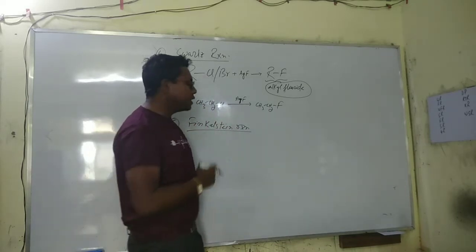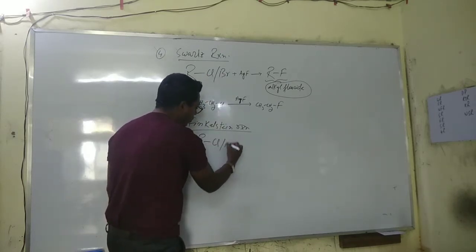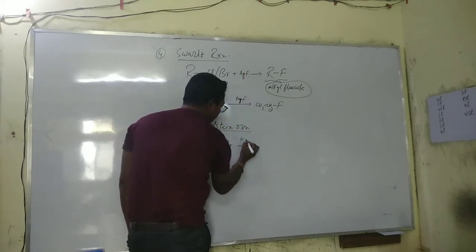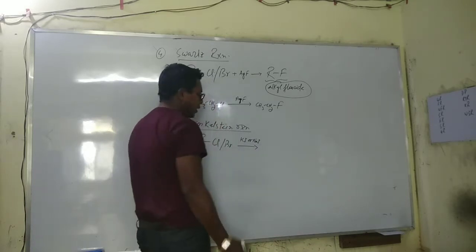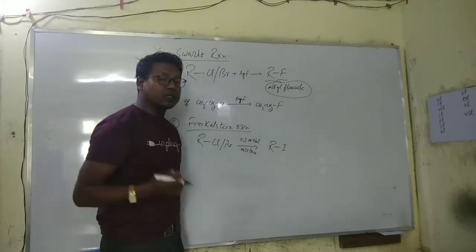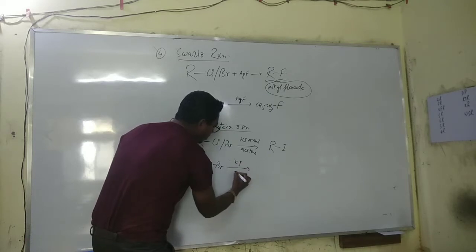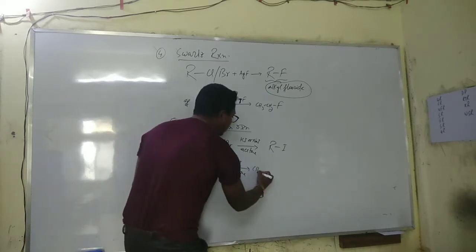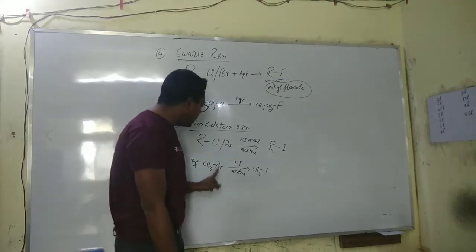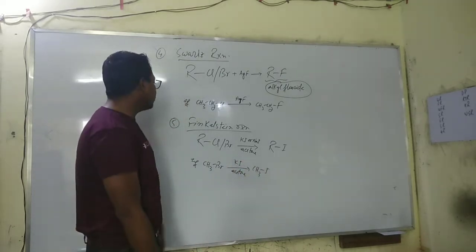This is an example of the Swarts reaction. The fifth type of reaction is the Finkelstein reaction. In this reaction, an alkyl fluoride or bromide reacts with KI or NaI in the presence of acetone to give alkyl iodide. For example, ethyl bromide reacts with KI in the presence of acetone to give ethyl iodide. Here bromine is substituted by iodine — only an exchange of halogen takes place.